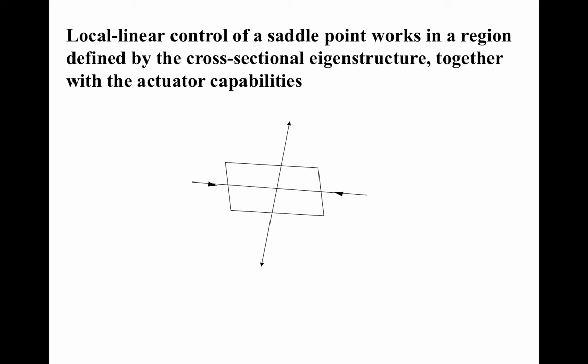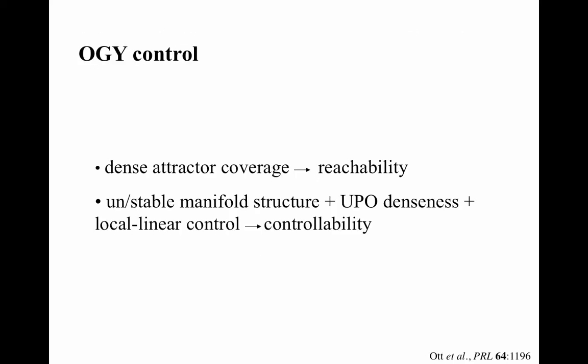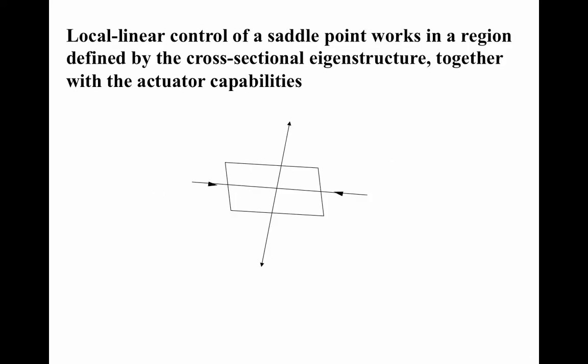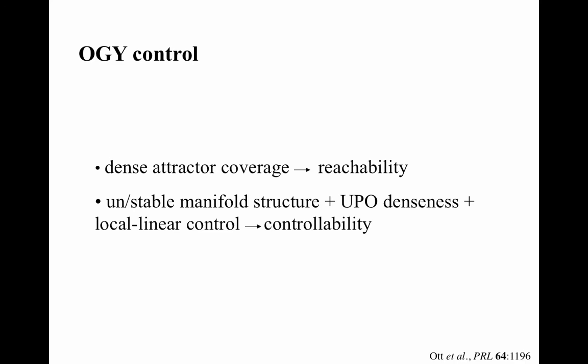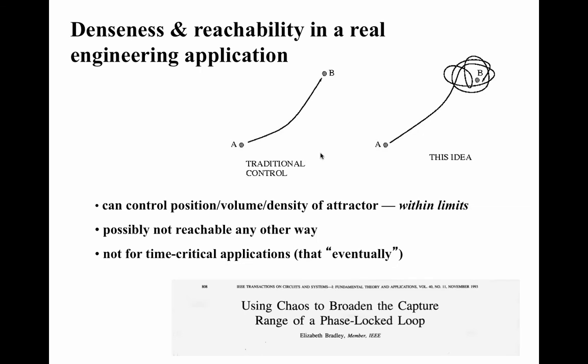You need to know the directions of the manifolds and the magnitudes of the lambdas to build the controller, but you now know how to do that after the past several units. In summary: you use the denseness of trajectory coverage to get near your destination, the denseness of unstable periodic orbits to find one near your destination, and then local linear control to stay on that UPO once you get nearby. Control theory people will recognize all that as a proof of both reachability and controllability. This scheme is called OGY control, after Ed Ott, Celso Grebogi, and James Yorke, and the original paper is shown on this slide.